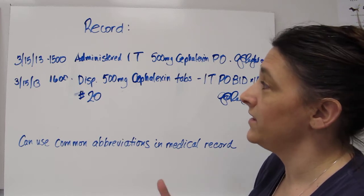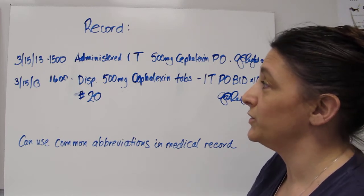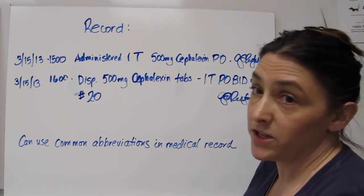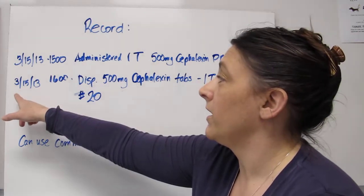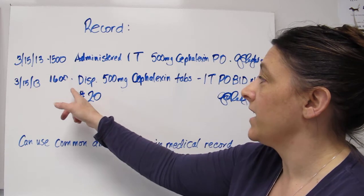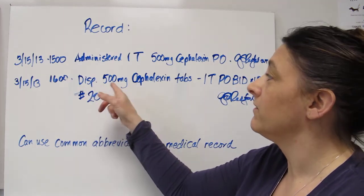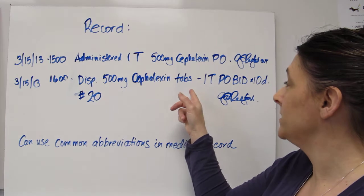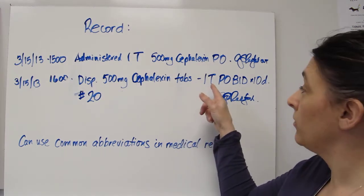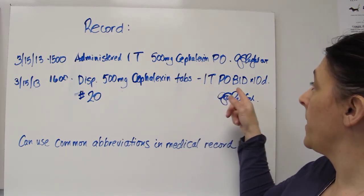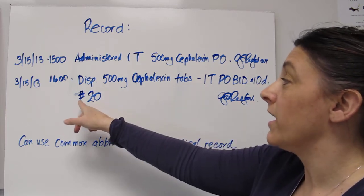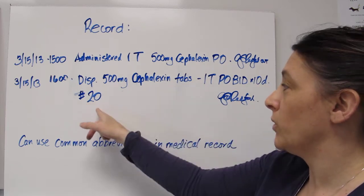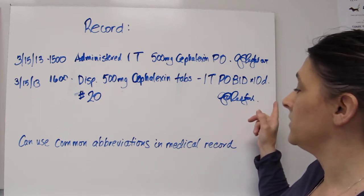Now if the doctor then tells you that they would like you to dispense some medication for Fluffy to go home you would write the date, the time, and then dispense 500 milligram Cephalexin tabs, the SIG, one tablet PO BID times 10 days, and then the quantity that you dispensed which would be 20. Again then your signature after that.